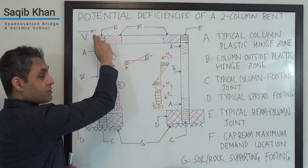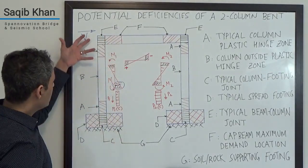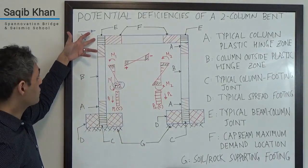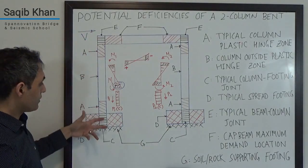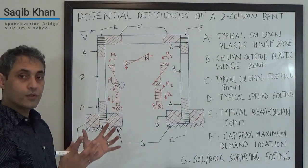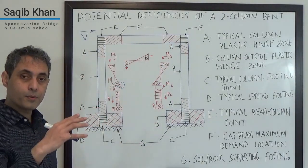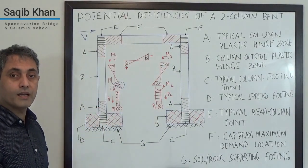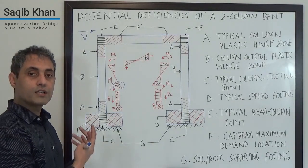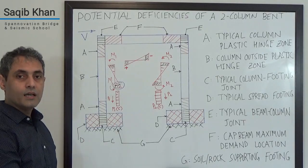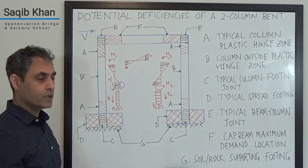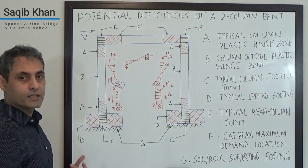But to have these behave properly and not form pins or hinges within themselves, what we want to have is appropriate confinement reinforcement through here. So two things for joints: size them appropriately, and then we need to also provide appropriate joint confinement reinforcement so that principal stresses and joint shear are appropriately designed for and dealt with.